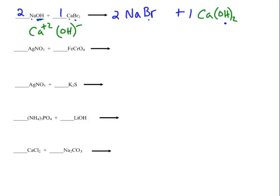Now look up the solubility chart for NaBr: all Group 1 ions are soluble, no exceptions, so sodium makes NaBr soluble and aqueous. Calcium hydroxide: by the hydroxide rule, hydroxides are insoluble except when with a Group 1 ion, calcium, barium, strontium, or ammonium — calcium falls into that category, making Ca(OH)2 aqueous. When both products are soluble, no reaction appears to occur and no precipitate forms, so we put an X through the arrow.